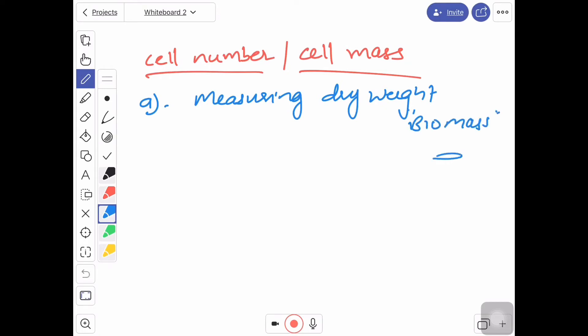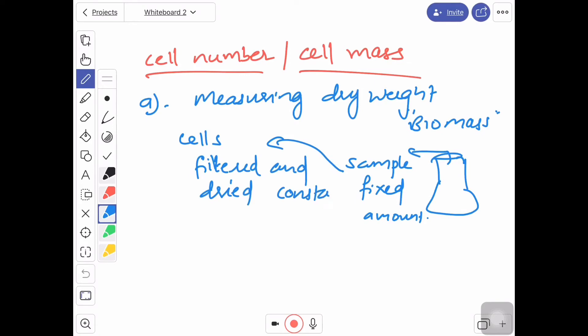We take from the culture at regular intervals a sample. That sample is a fixed quantity or fixed amount of medium, and their cells are filtered and dried till they get a constant weight. That means we remove the moisture from the cells and till they get a constant weight, we keep on drying them.